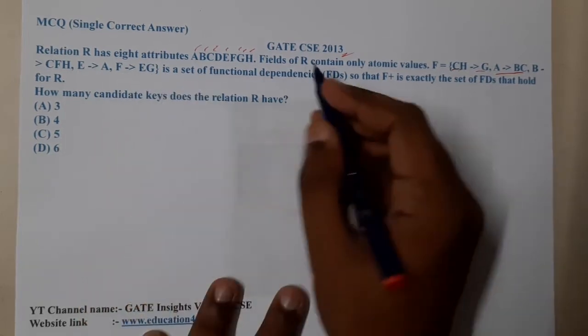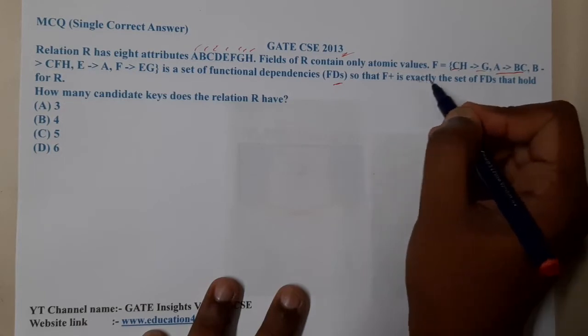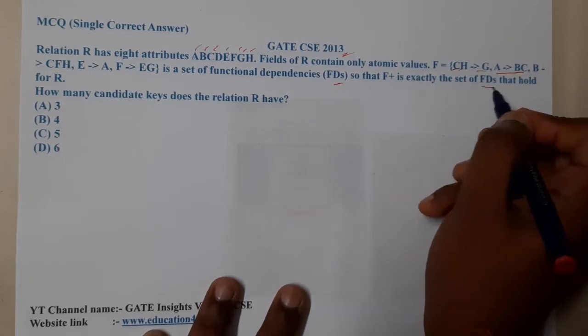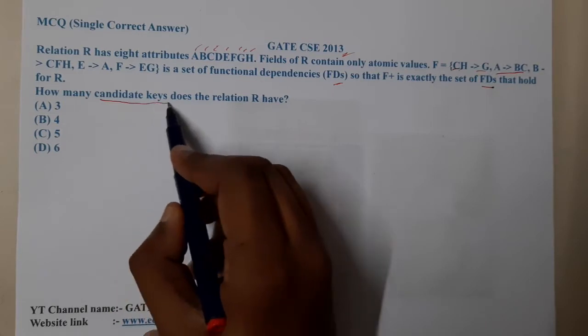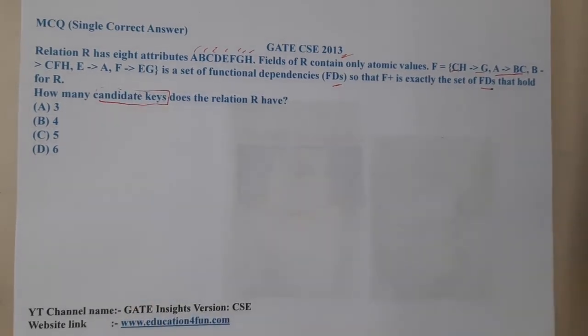It is a set of functional dependencies so that F+ is exactly the set of FDs that hold for R. Now they are asking what is the count of the candidate keys. This is an easy question.